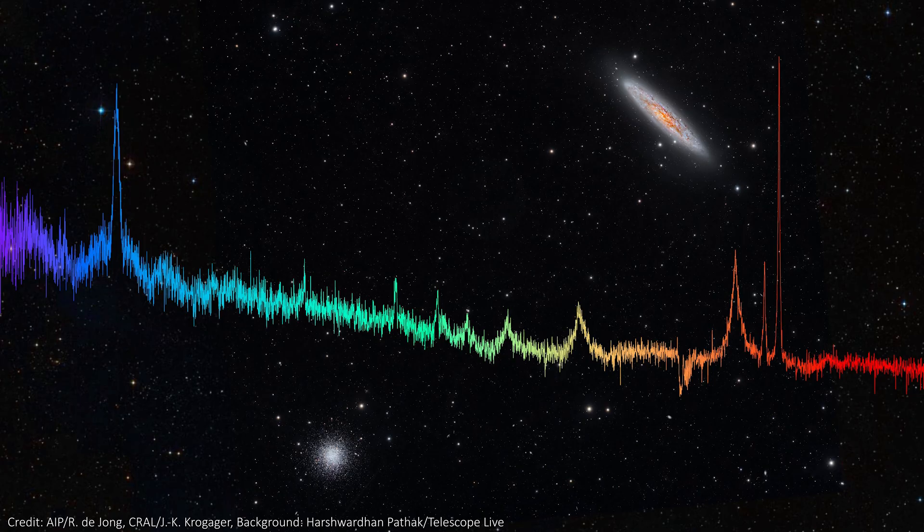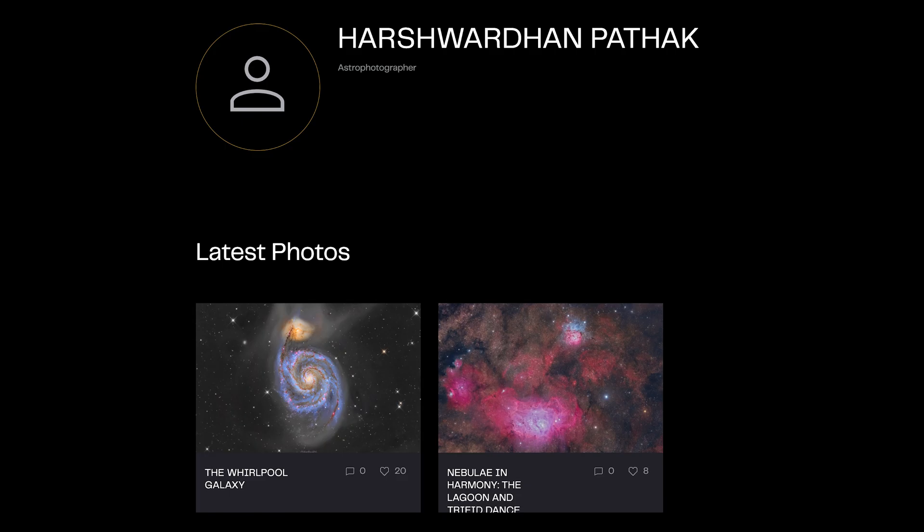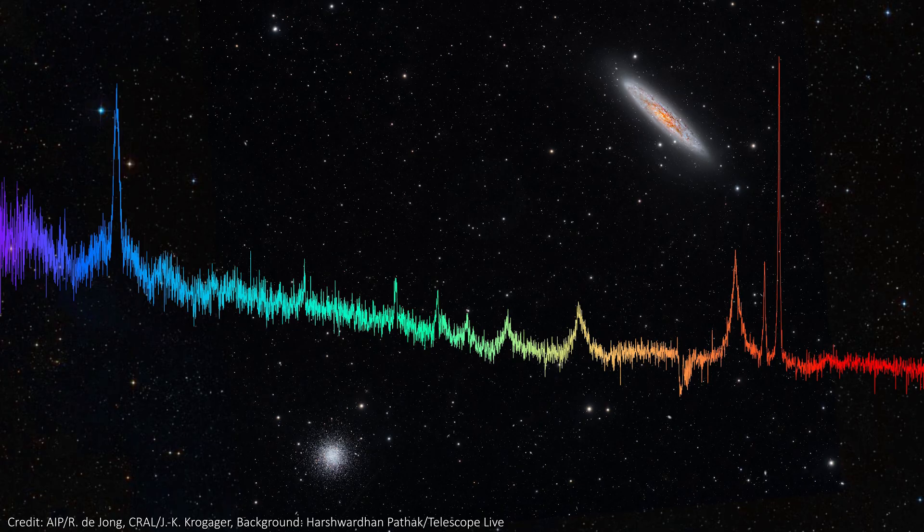Well, now that we know what Foremost can do, let's look at what it did do during first light. As I said, Foremost can't take images, so it's all spectra we're getting here. The background image in this press release picture wasn't taken by Foremost, but it was taken by a researcher and amateur astrophotographer Hashwarden Pathak, who takes these amazing images, and this one covers the patch of sky that Foremost was observing during first light.